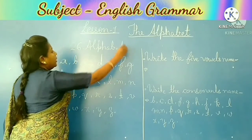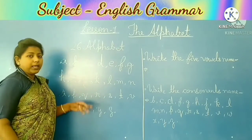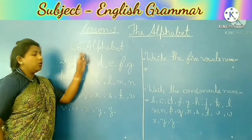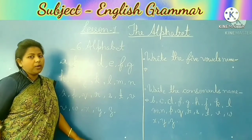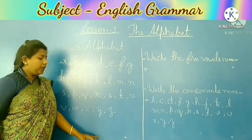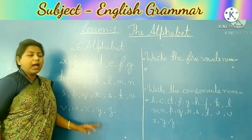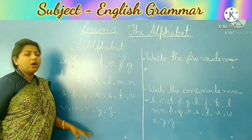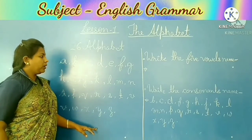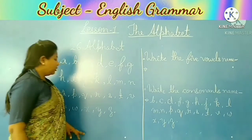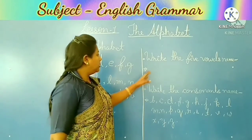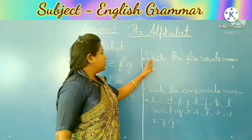Is that clear? A to Z means 26 alphabet — maine aapko apne start video mein bataya tha na, alphabet means kya hota hai, A to Z. Now we are going to your second part: question and answer.